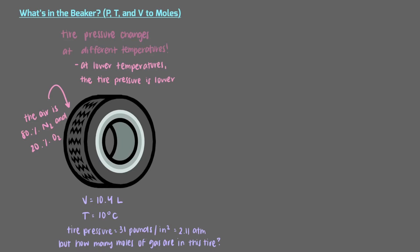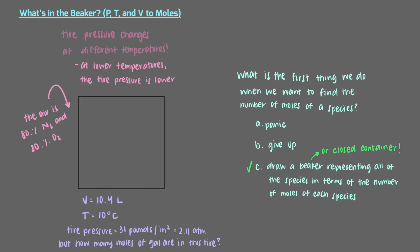Let's take it one step at a time. What's the first thing we do when we want to find the number of moles of a species? That's right, the first step is always to draw a beaker. Well, in this case, we should draw a closed container. We don't want the gas to escape, but it's the same idea. Even though we're talking about gas in tires in this problem, we can draw a beaker to represent the tire.